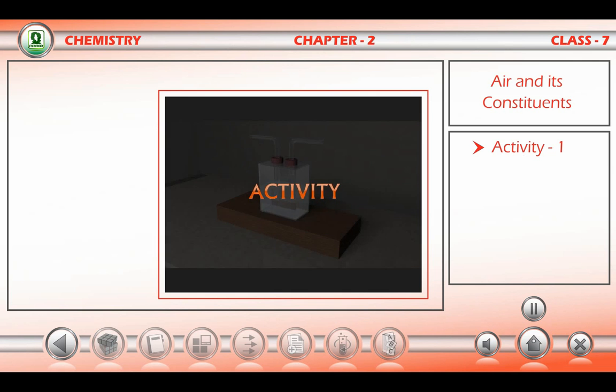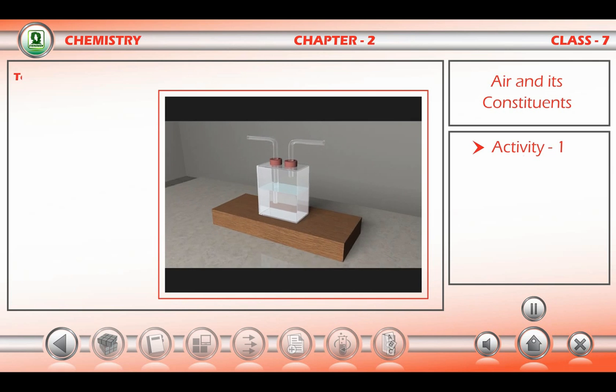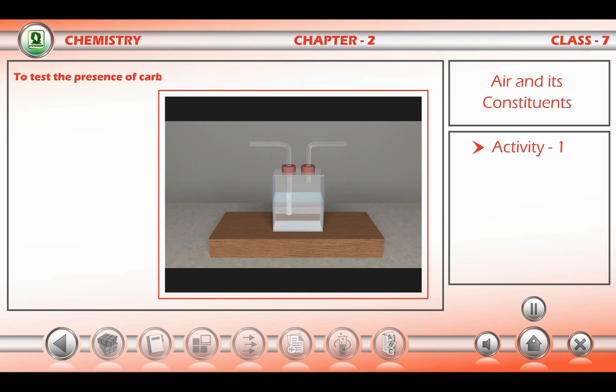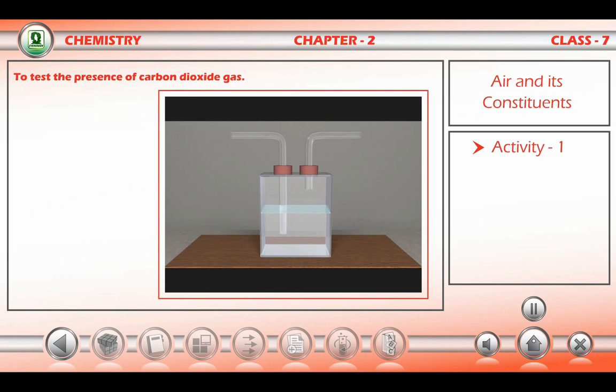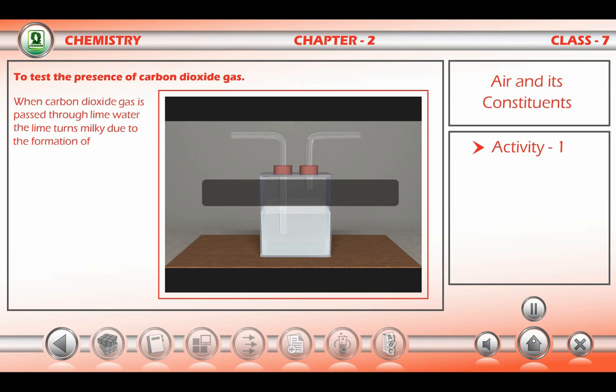Activity: To test the presence of carbon dioxide gas. When carbon dioxide gas is passed through lime water, the lime water turns milky due to the formation of insoluble calcium carbonate. Lime water has the formula calcium hydroxide.